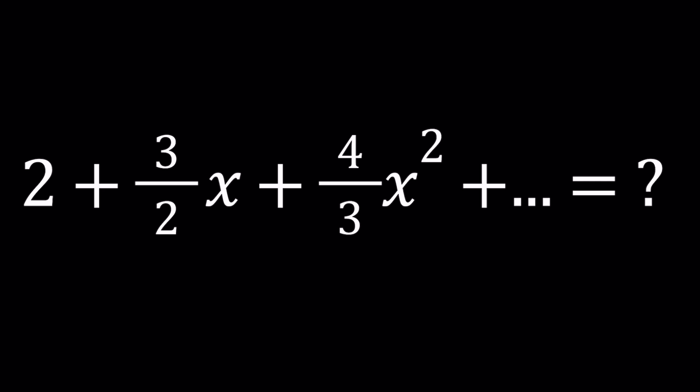The coefficients are numbers like (n+1)/n, depending on how you choose your n. So the numerator is 1 more than the denominator, and we have powers of x starting with x to the power 0, whose coefficient is 2. How do we add something like this? There are infinitely many terms.